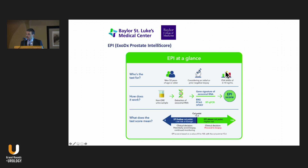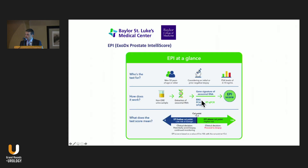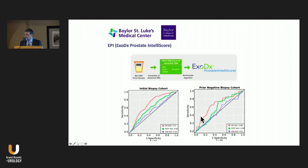A newer test is called EPI — the ExoDx. EPI is performed in the urine but does not require any prostatic massage or expression. They also have a kit that can be done at home — patients can collect urine at home, ship to the lab, and get results in a few days. Indicated for PSAs between 2 and 10, they look at exosomal RNA. The genes interrogated are ERG, PCA3, and SPDEF, producing a score. A cutoff above 15.6 is informative and suggestive of proceeding to biopsy. ROC curves show the EPI compared to the PCPT calculator or using total PSA alone.